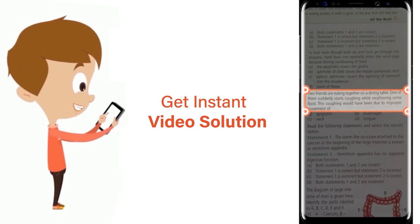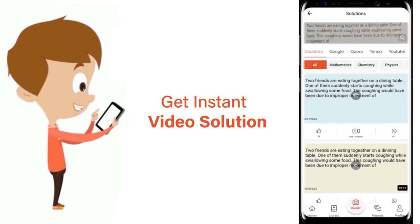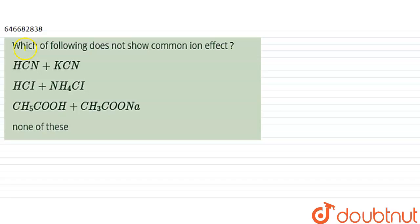The question asks: which of the following does not show the common ion effect? We need to find the option which will not show the common ion effect. As we know, the common ion effect depends upon the type of buffer formed.